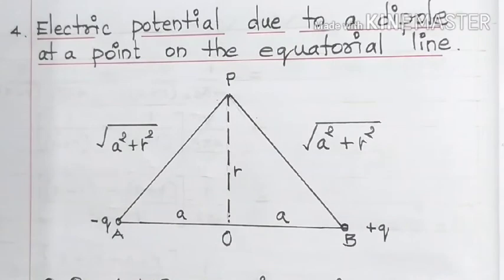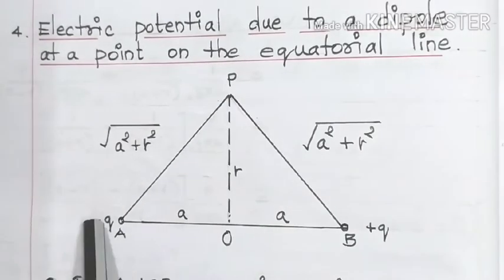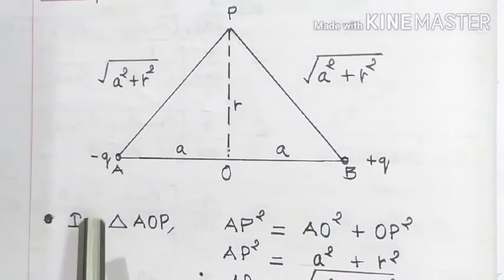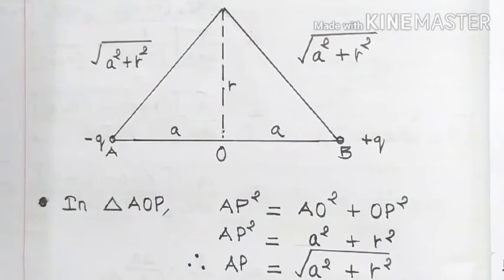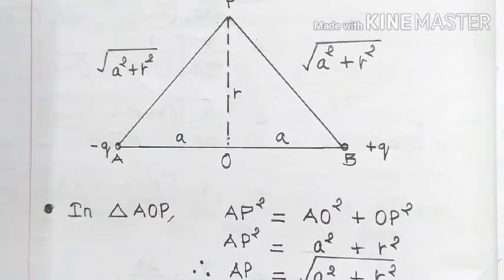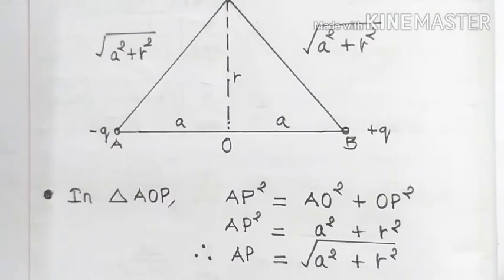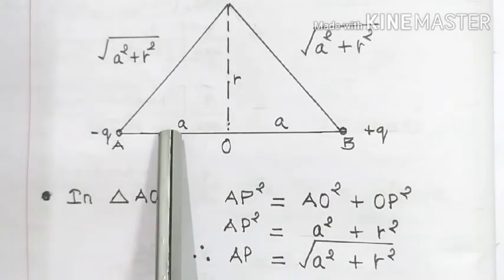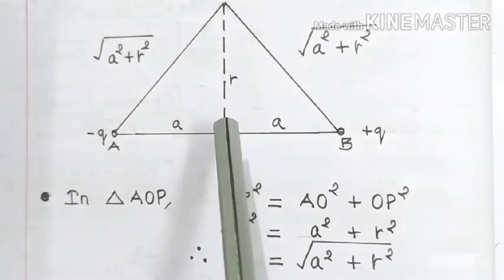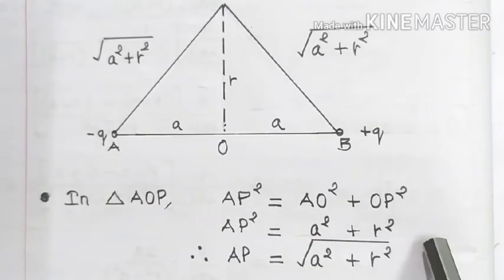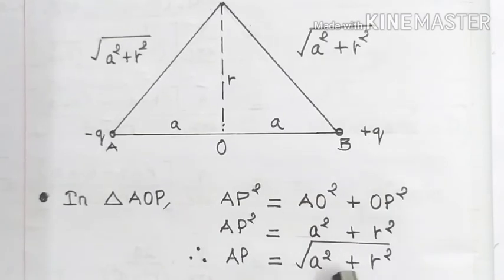Now what we are going to do is, by using Pythagoras theorem, we are going to calculate the distance AP. Let us take this triangle first — it is a right-angled triangle. In triangle AOP, using Pythagoras theorem, AP² is equal to AO² plus OP². AO is nothing but small 'a', so a², and OP is nothing but small 'r', so r². Therefore, AP is equal to square root of a² plus r².